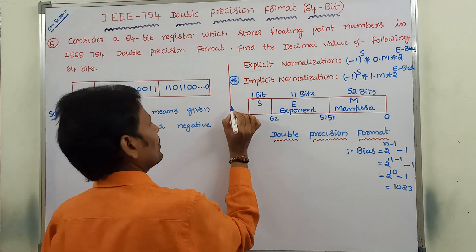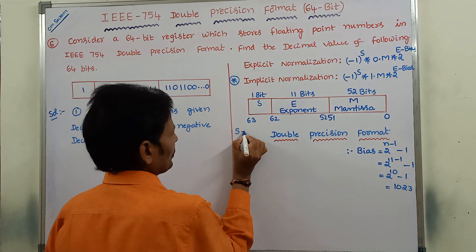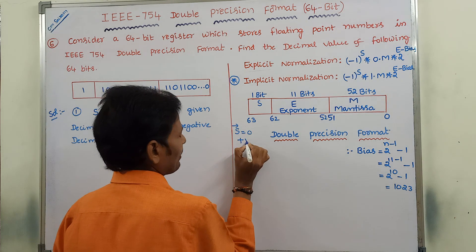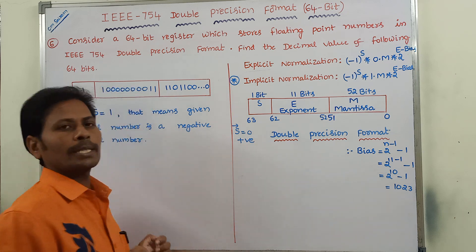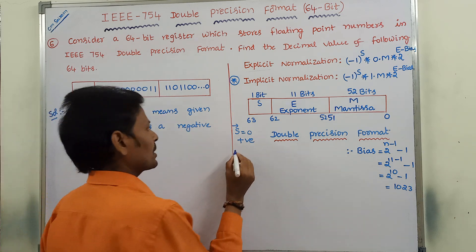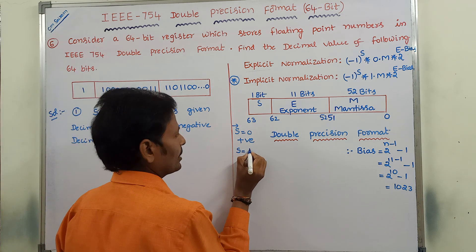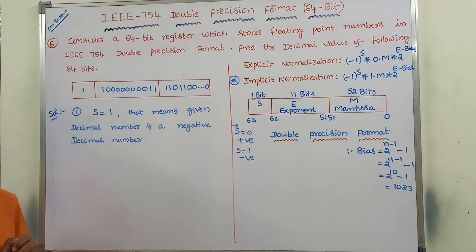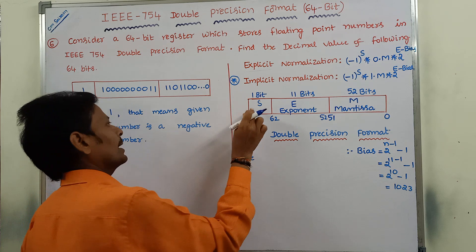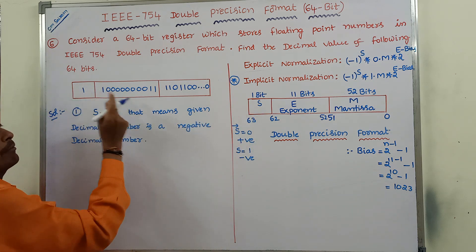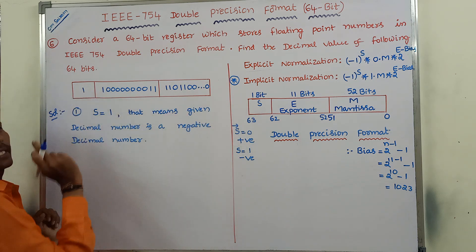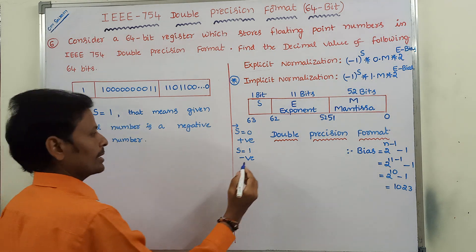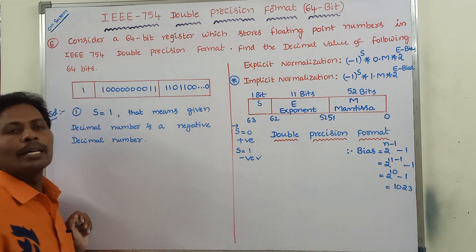When S value is equal to 0, we can say that the given decimal number is a positive decimal number. When S value is equal to 1, we can say that it is a negative decimal number. Here, S value is 1, so we can say that the given decimal number is a negative decimal number.